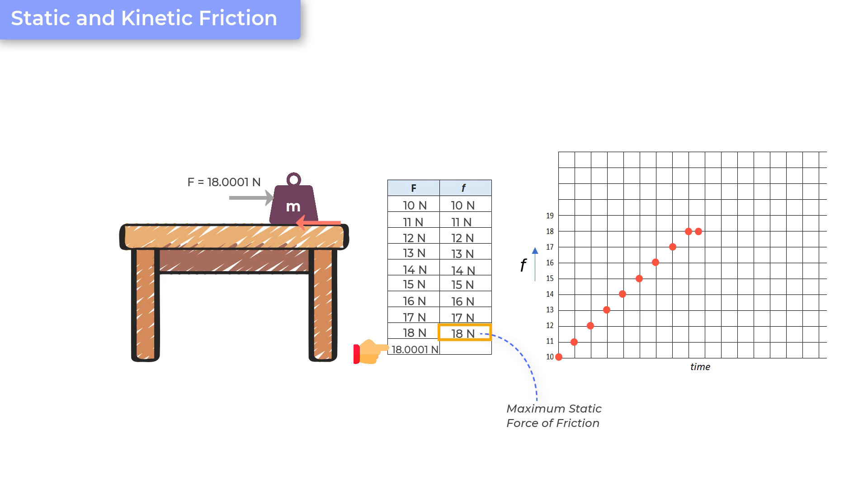And why static? Because the word static means stationary. But then you see, these forces are also values of static force of friction. But this magnitude is special because this is maximum possible static force of friction, which equals mu static into normal reaction. Now, this coefficient, mu static, or mu s, is a dimensionless number and is determined experimentally. That is, we do actual experiments in a lab and assign values to various combinations of surfaces. And these values depend on properties of both the body and the surface.